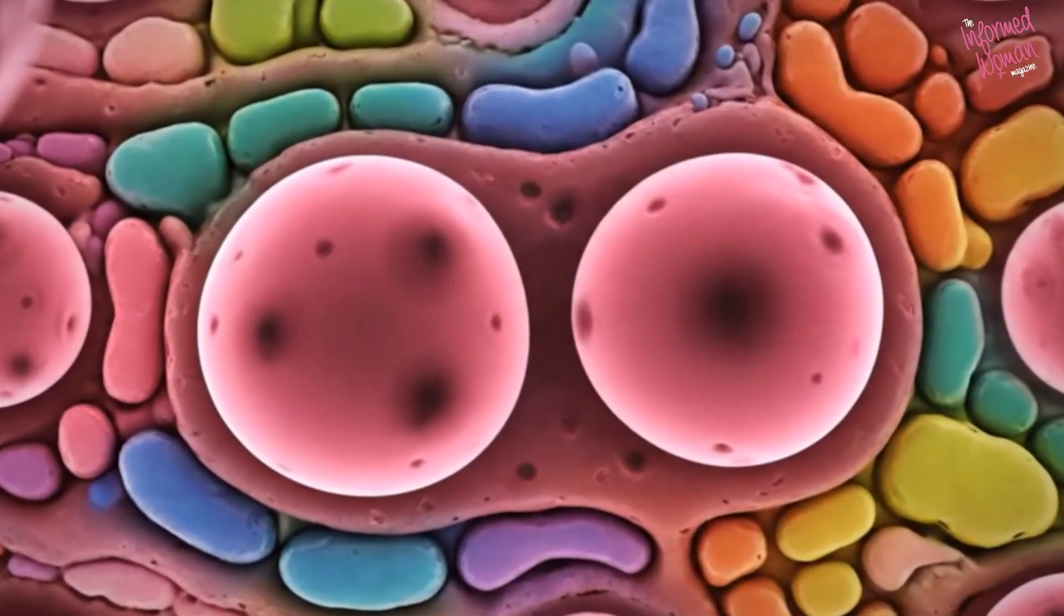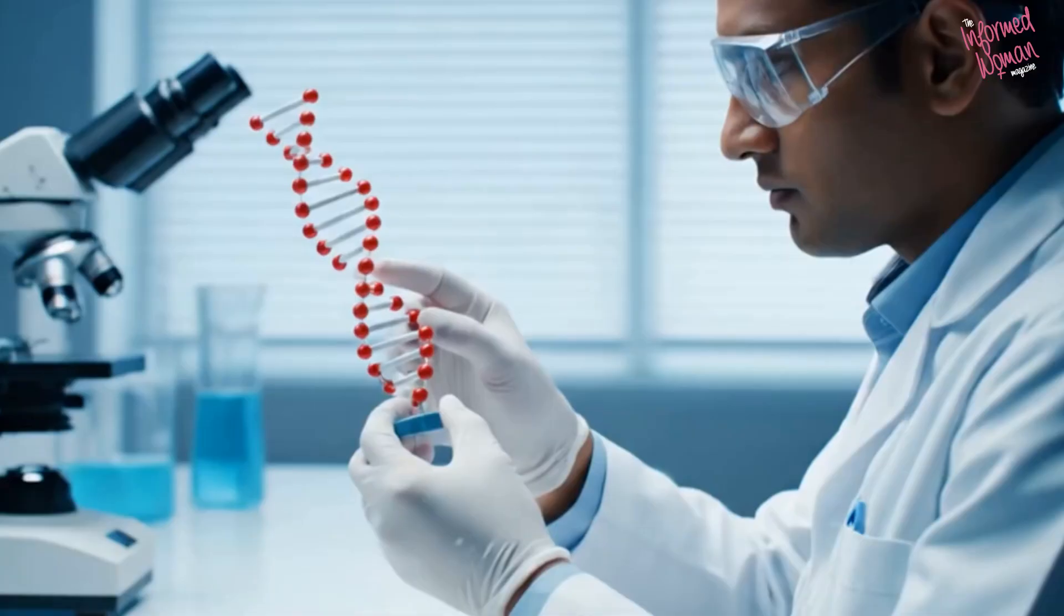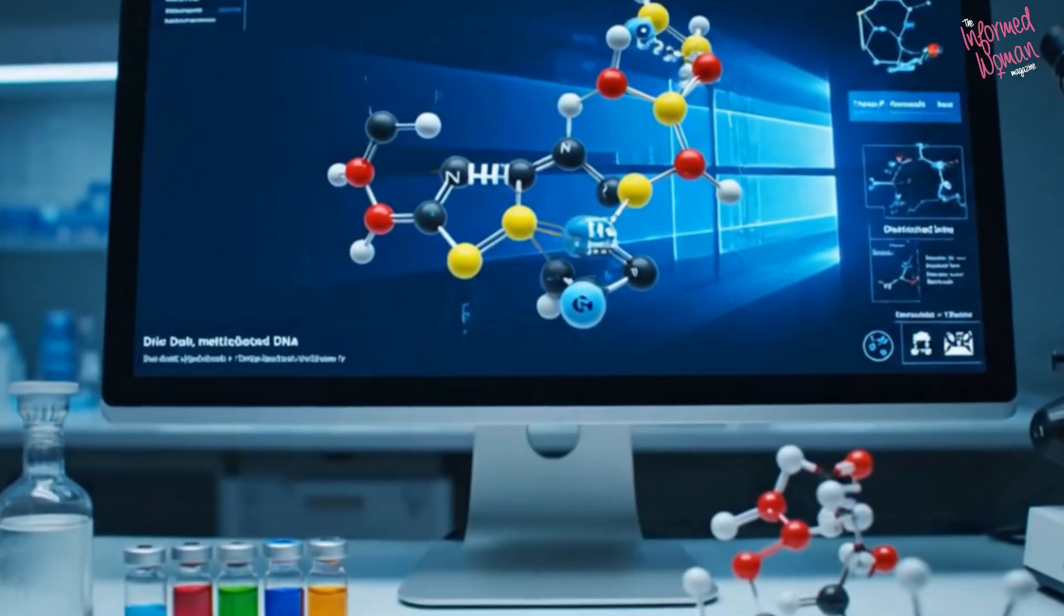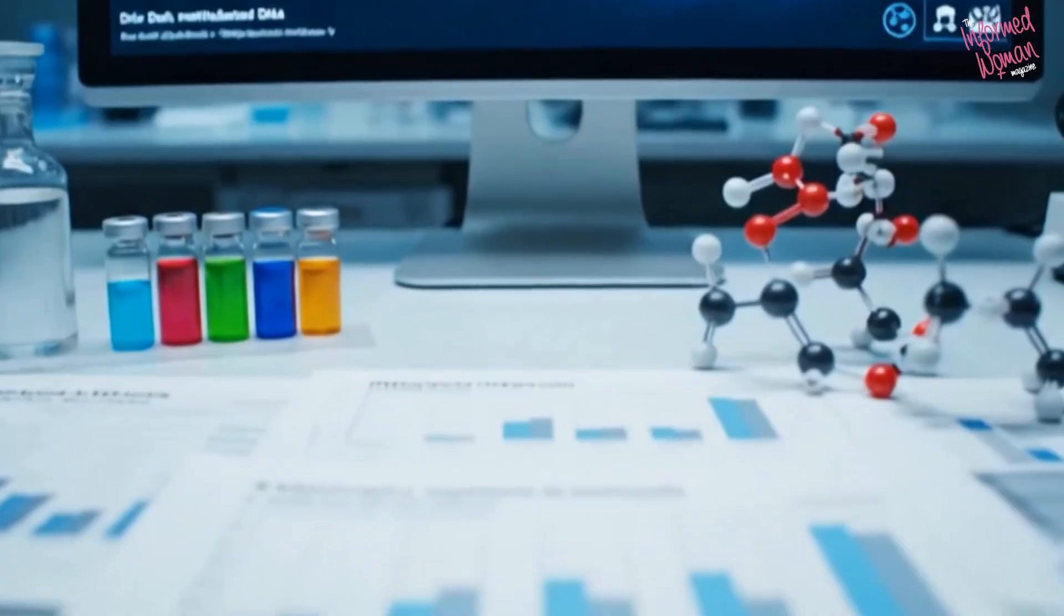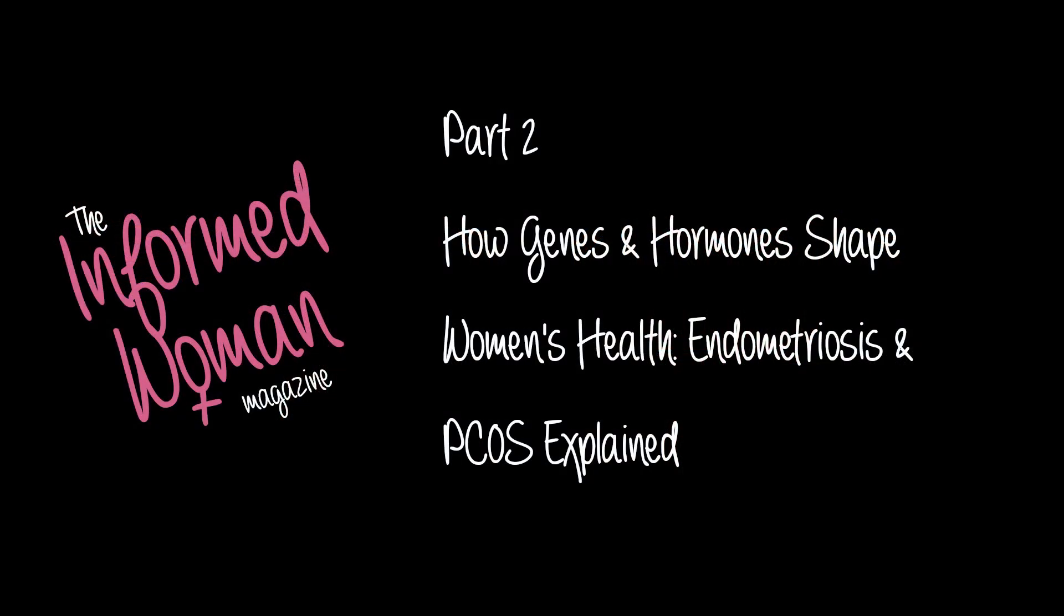In our next video, we'll dive deeper into how these mechanisms shape two of the most common reproductive disorders in the next part of this series: endometriosis and polycystic ovary syndrome, and why they may represent opposite ends of the same epigenetic spectrum.